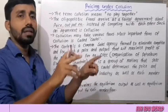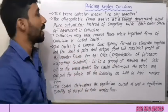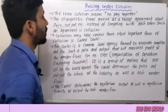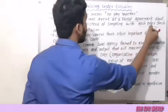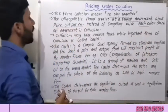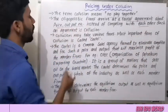A common sales agency is formed to eliminate competition, instead of competing with each other. Such an agreement is called collusion.